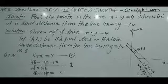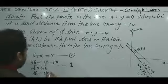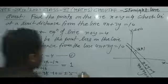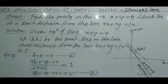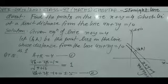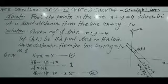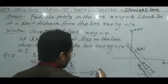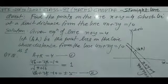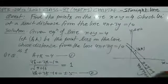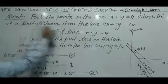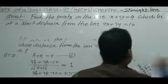So we get two cases: 4H plus 3K equal to minus 10 plus 5, which gives us 4H plus 3K equal to 15, and 4H plus 3K equal to minus 10 plus minus 5, giving 4H plus 3K equal to 5. Consider these as equation 2. On solving equation 1 and 2 we can get the values of H and K.